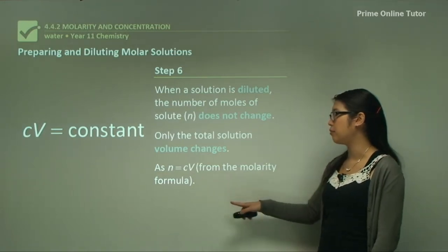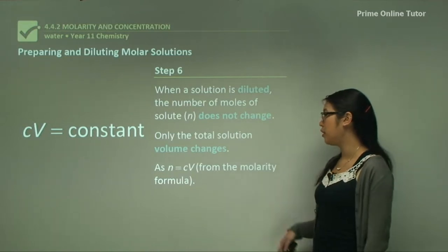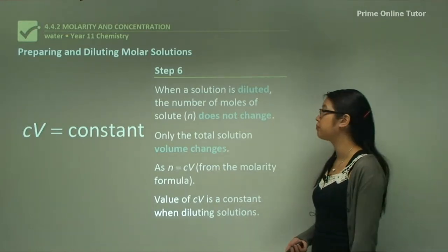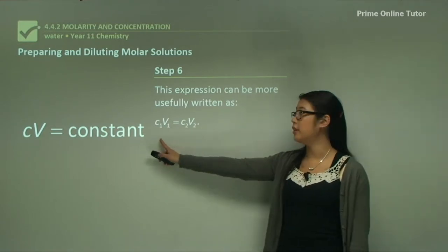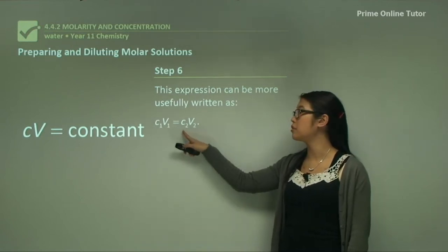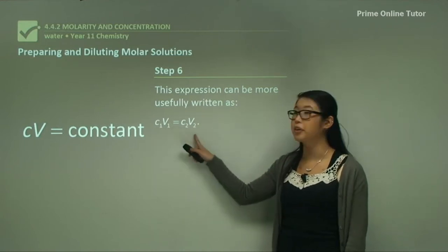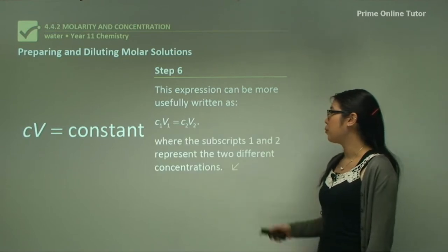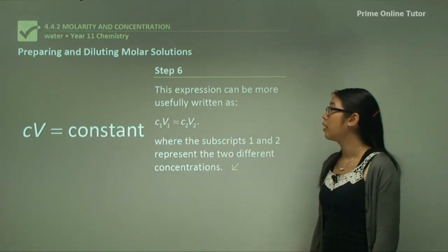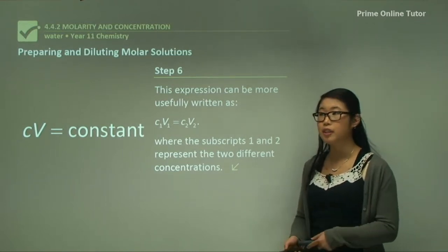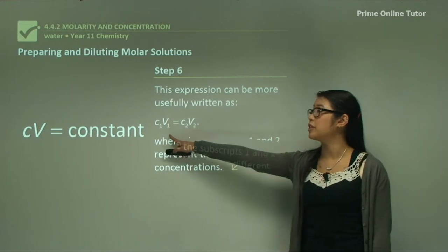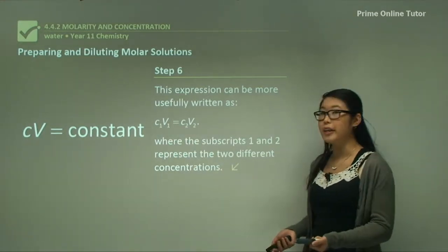N equals C times V — the number of moles equals concentration times volume. The value of C times V is constant when you dilute a solution, giving us the important dilution equation: C1V1 equals C2V2, where subscripts 1 and 2 represent the two different concentrations and volumes before and after dilution. This equation is essential to remember.